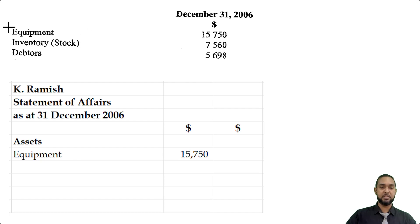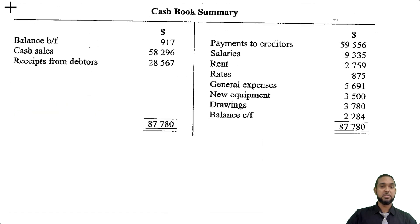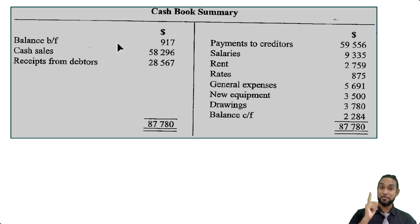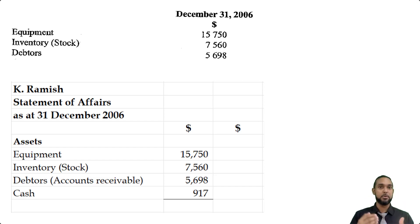We could start with equipment, which was given to us at $15,750. We also have inventory or stock, and debtors. But don't forget we also had a cash balance. They used to love to do this — they would put the cash book balance up in the cash book but wouldn't put it in the list of balances below. So you had to be mindful enough to remember you have an opening cash balance of 917 and put that in your statement of affairs as well. They used to catch a lot of students like that. So we're going to add up those items and get a subtotal for assets of $29,925.